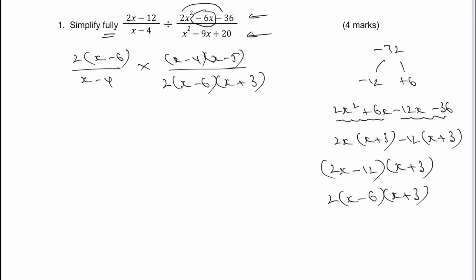And then really the fun bit starts, because what we can do then is start to cancel things out. So I've got x minus 4 I can cancel. I've got x minus 6 I can cancel. And actually I've also got 2 that I can cancel as well from top and bottom. And the full simplification of this now is going to be x minus 5 divided by x plus 3. And that would be the answer to question number 1.